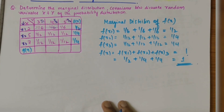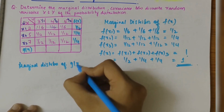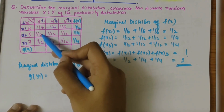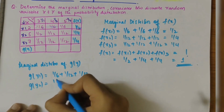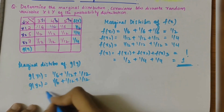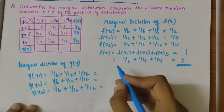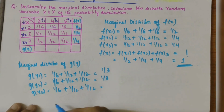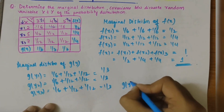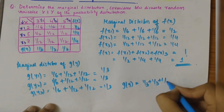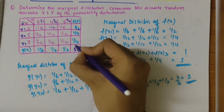Now let's find the marginal distribution of g(y). g(y1) = 1/6 + 1/12 + 1/12, g(y2) = 1/6 + 1/12 + 1/12, and g(y3) = 1/6 + 1/12 + 1/12. So we get 1/3 for each. When we add all of these, g(y1) + g(y2) + g(y3) = 1/3 + 1/3 + 1/3 = 1. All our marginal distribution values are correct.